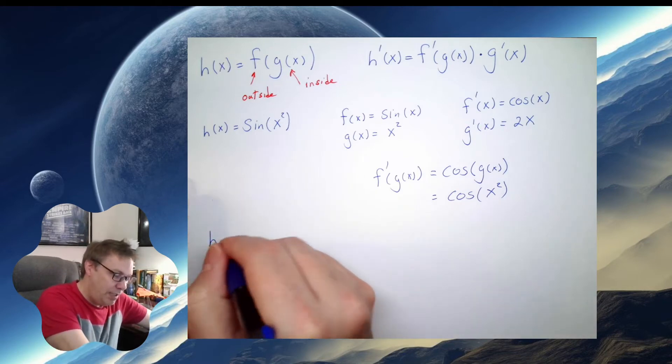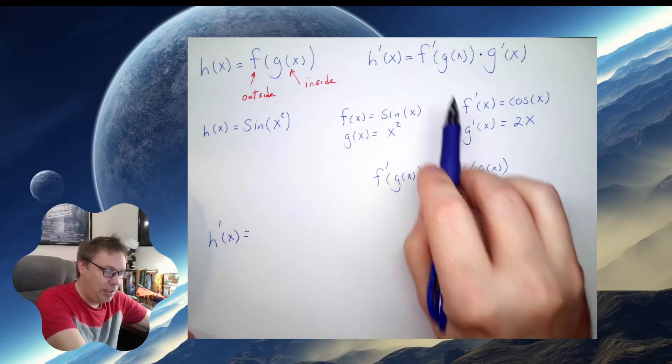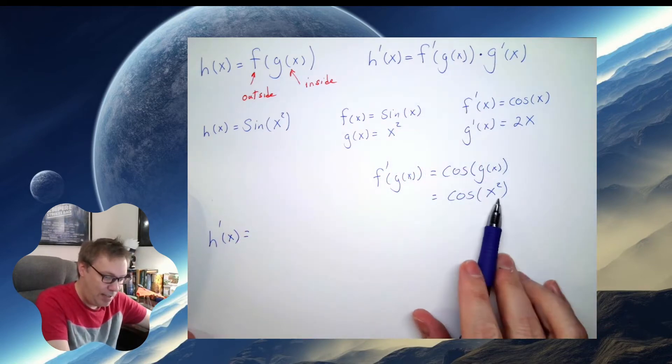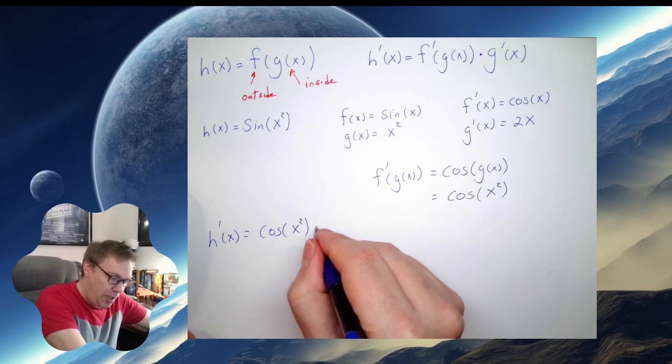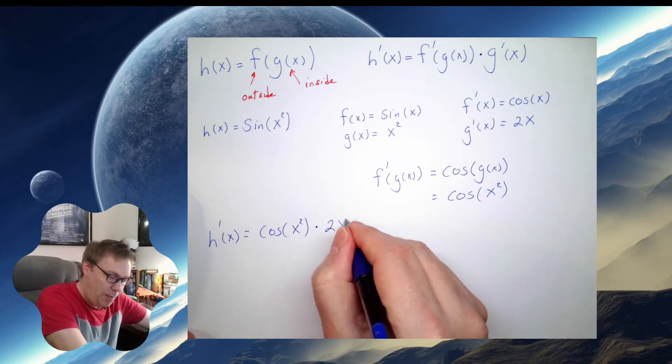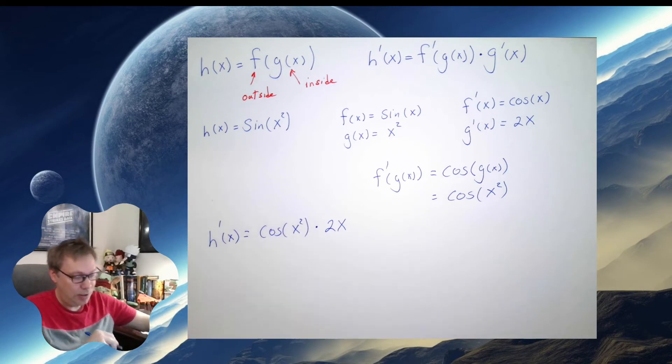Times g prime of x. So when all is said and done, I'm looking at h prime of x is f prime of g of x. That's this piece. Cosine of x squared, multiplied by g prime of x, which is 2x.